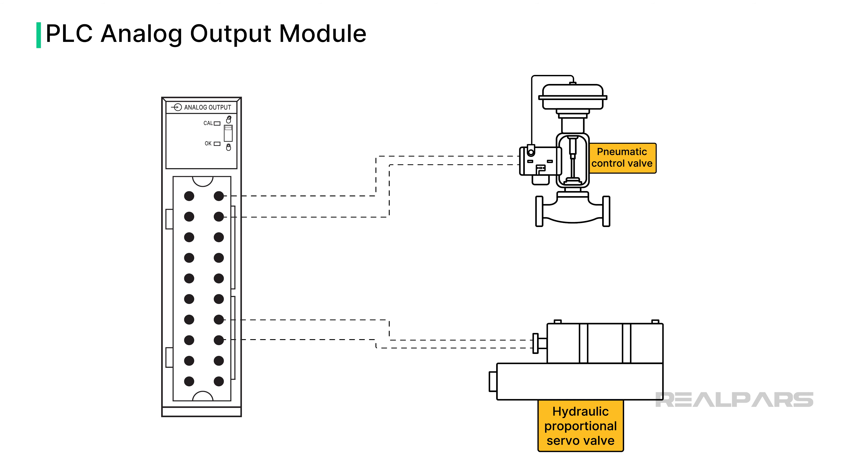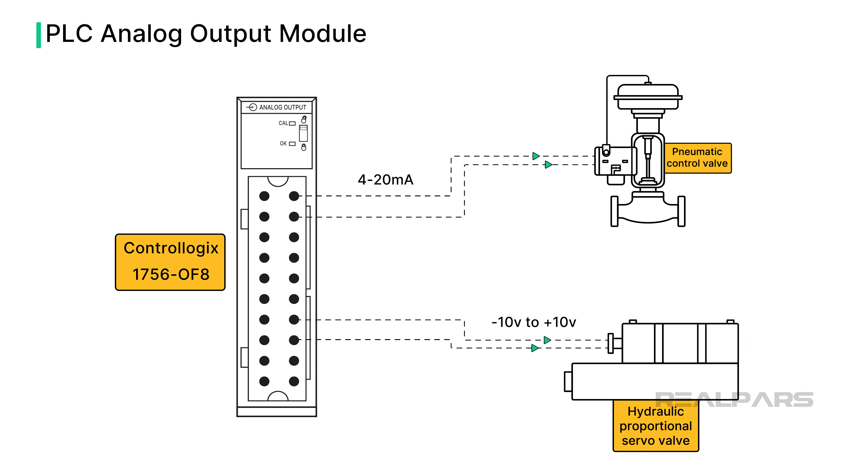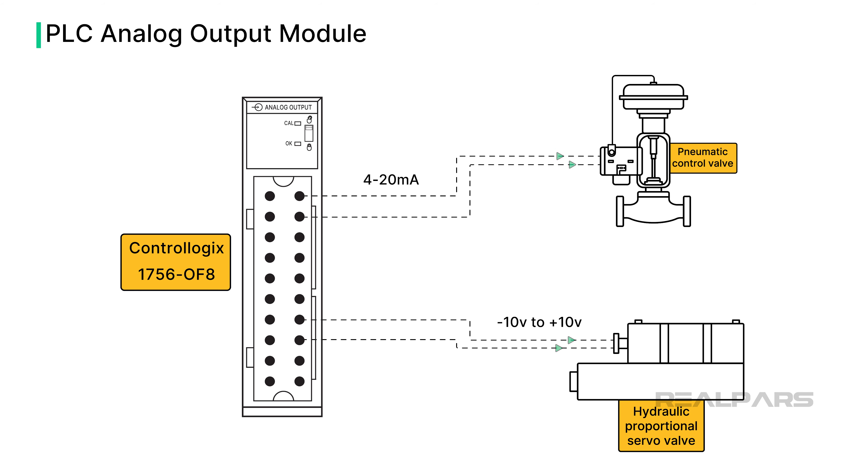Just like on the input side of the PLC, typical output voltage signals include 1 to 5 volts, 0 to 10 volts, and negative 10 to positive 10 volts. The most commonly used analog output signal is a 4 to 20 milliamp current. An example of a typical analog output module is the Allen-Bradley ControlLogix 1756-OF8, which can control eight separate voltage or current devices.